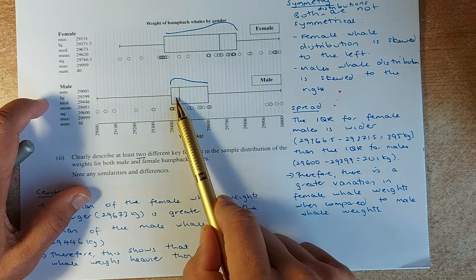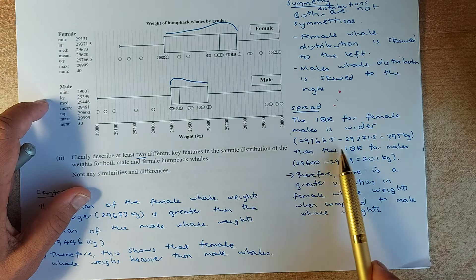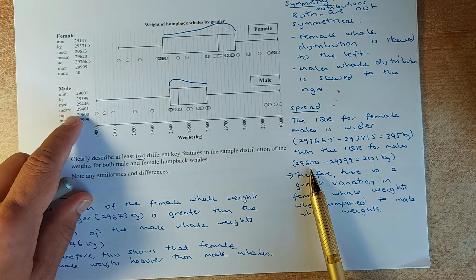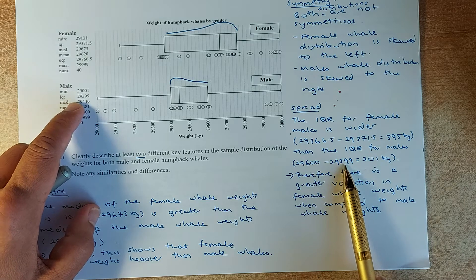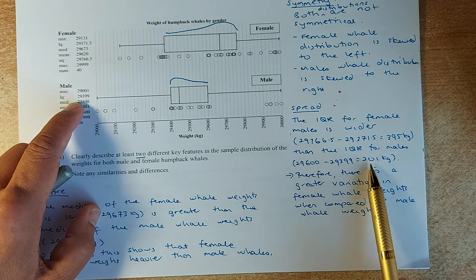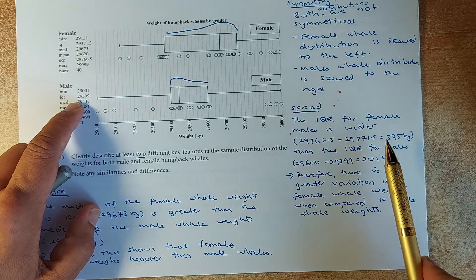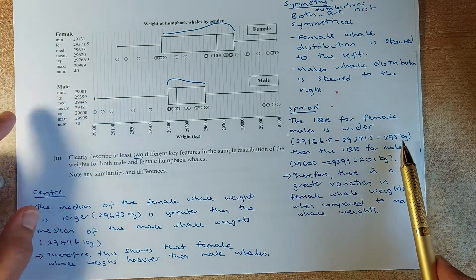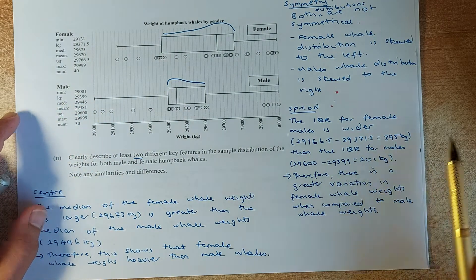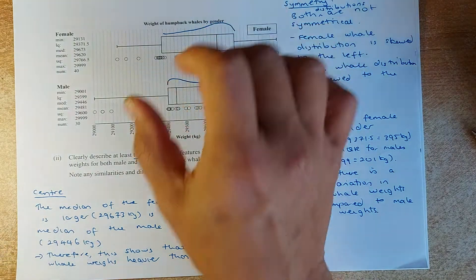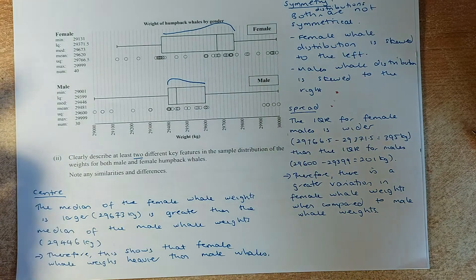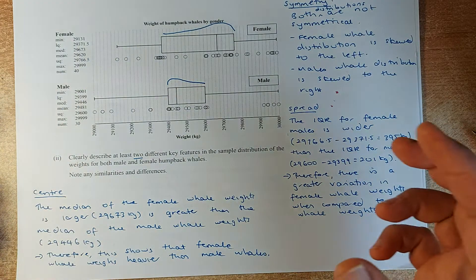This is definitely bigger than the box for the male, or the interquartile range for male, which is the upper quartile 29,600 minus the lower quartile 29,399, and that's only 201. So the interquartile range for female, which is 395, is definitely bigger than 201. What does it mean? We can say that the female distribution has a bigger variation or bigger spread than the male.